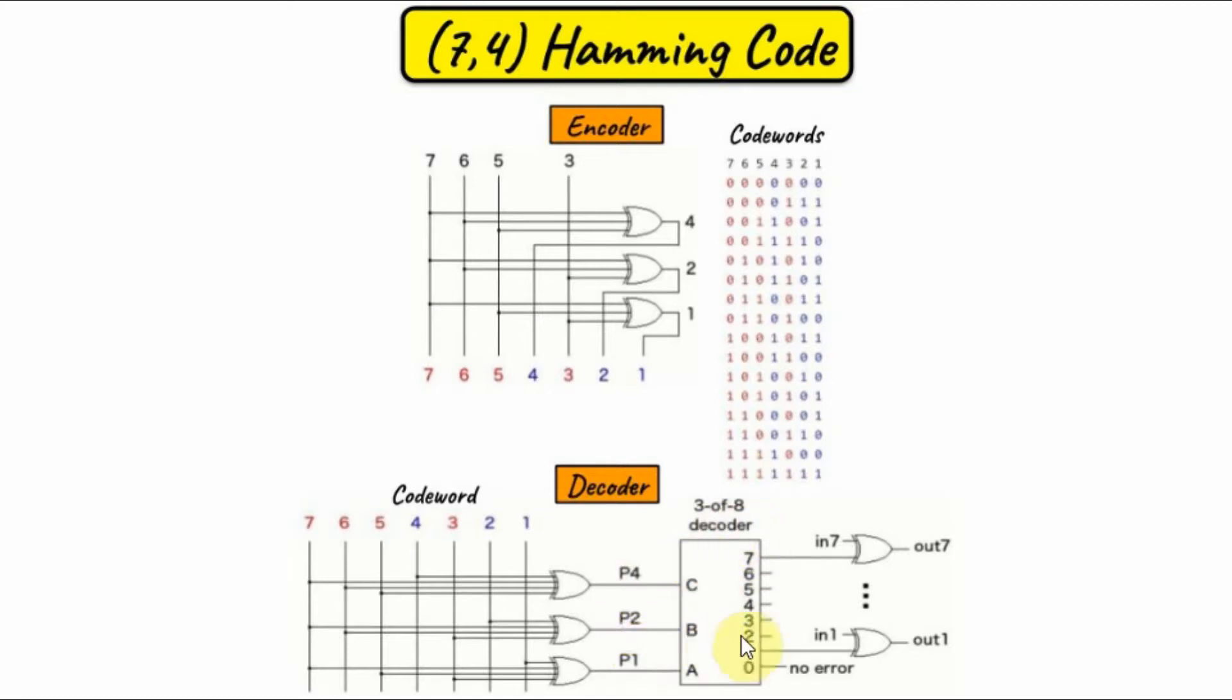So, with the help of this 3-to-8 decoder, let's see how it works. Let's say the value was 0, 0, 0. This implies that no error has occurred in the codeword. So, this output 0 will be active, implying no error.